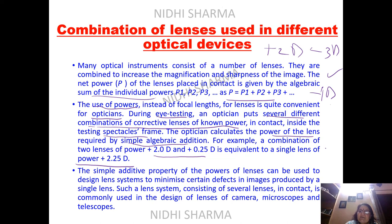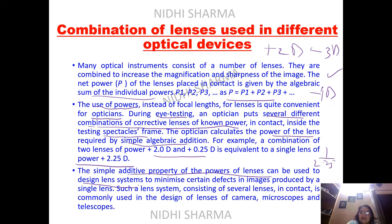By taking the reciprocal of the combined power of 2.25 diopter, you can find the focal length of the lens. This simple additive property of lens powers is used to design optical instruments such as cameras, microscopes, and telescopes.